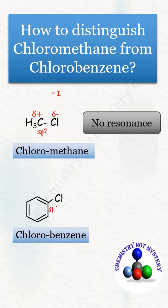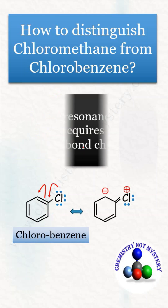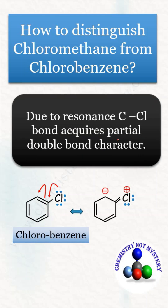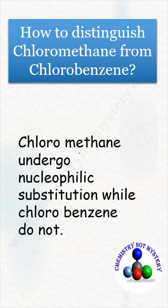In chlorobenzene, chlorine is bonded to an sp2 hybridized carbon, so the lone pairs of chlorine will participate in the resonance of the benzene ring, due to which the carbon-chlorine bond acquires partial double bond character. Hence it becomes difficult to break the bond between carbon and chlorine, so chloromethane can undergo nucleophilic substitution reaction while chlorobenzene does not, due to partial double bond character.